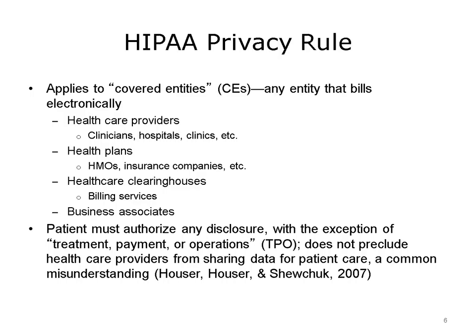Those who work in a health care setting in the United States are probably familiar with the HIPAA privacy rule. Patients receiving care in the United States also are exposed to the HIPAA privacy rule. The HIPAA privacy rule applies to covered entities, which are essentially any entities that electronically bill or are involved in the billing process for patient care services. One category of covered entities is health care providers, such as clinicians, hospitals, and clinics. Another category is health plans, such as health management organizations, or HMOs, insurance companies, and others, including business associates. This rule also applies to health care clearinghouses that deal with sensitive health information usually concerning billing services.